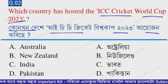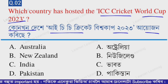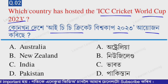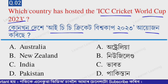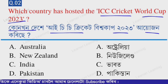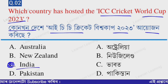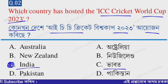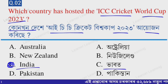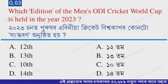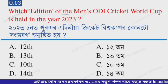Next question: which country has hosted the ICC Cricket World Cup 2023? Option A is Australia, option B is New Zealand, option C is India, and option D is Pakistan. The correct option is option C — India. India hosted the ICC Cricket World Cup 2023.